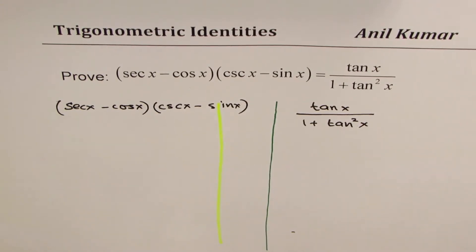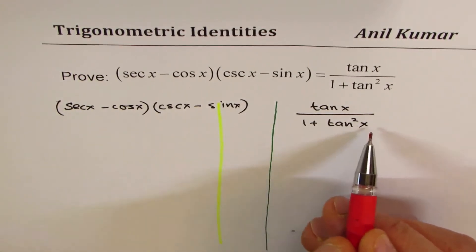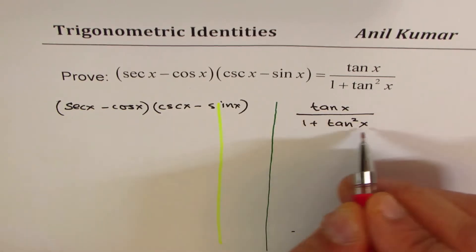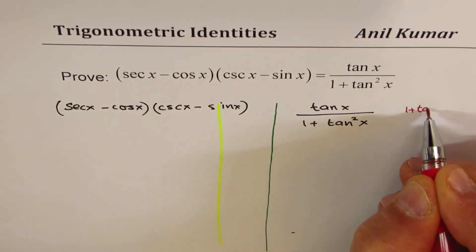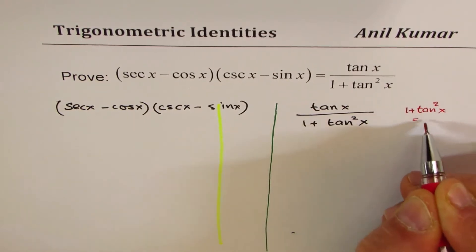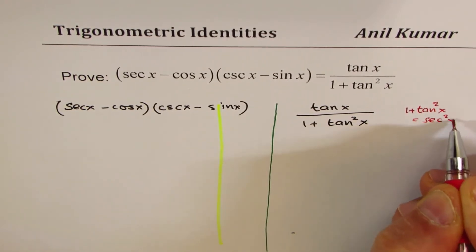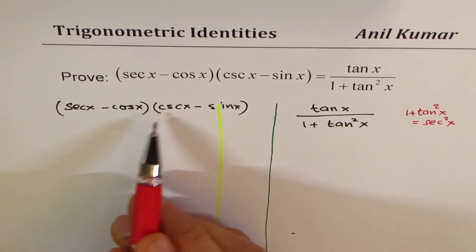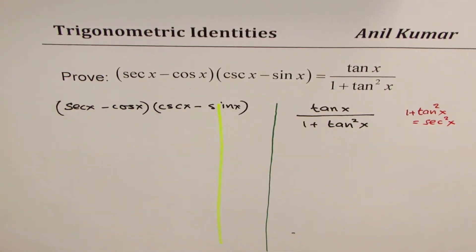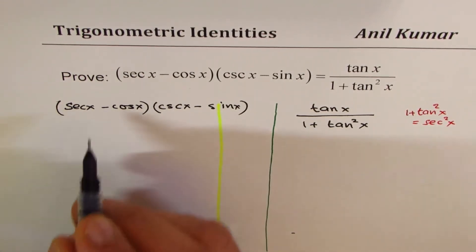Now, I hope you remember the Pythagorean identity. What is 1 + tan²x? 1 + tan²x = sec²x. That is what we are going to replace this with. And secant, cosecant are reciprocal functions, so we'll write them as reciprocal functions. Let's begin from the left side.